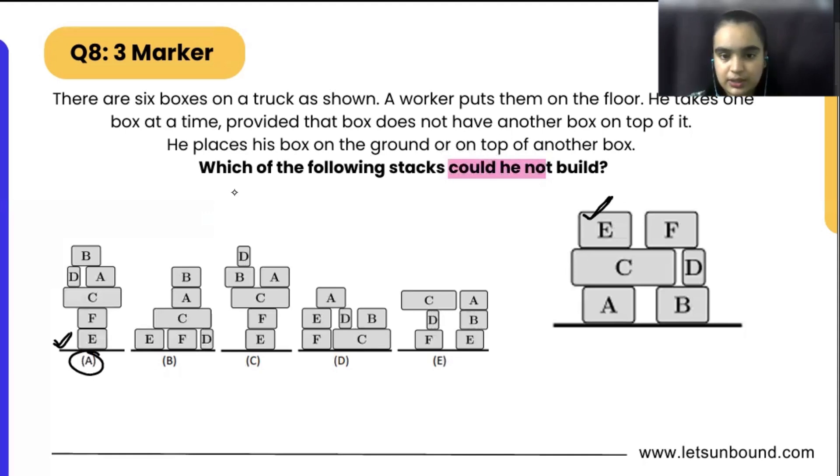And then F on it, and then C on it, because if E and F are not there then C is not going to have anything above it. So we can take it from there and we can place it over F.